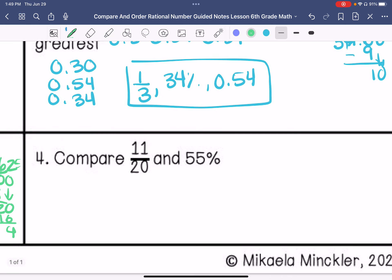We're going to compare these two. Let's change these into fractions with a common denominator. So I have 11 over 20 and 55 over 100 because percents are over 100. To get to 100, we multiply this by 5. So this is 55. So these are actually equal. So 11/20 is equal to 55%.